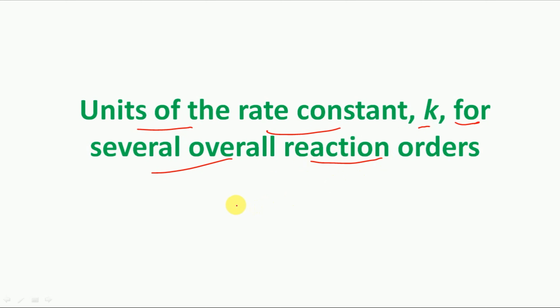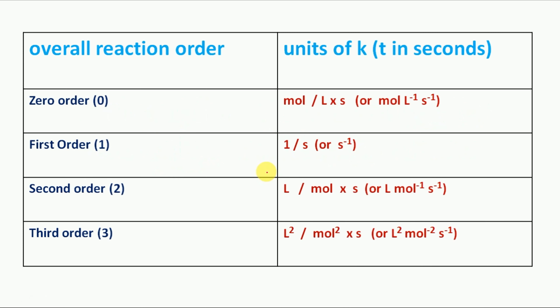We will discuss what is the unit of rate constant for zero order, first order, second order, and third order reactions. We are going to discuss a full table: the first column is overall reaction order and the second column is units of rate constant, with time T in seconds.